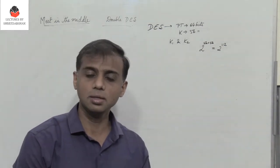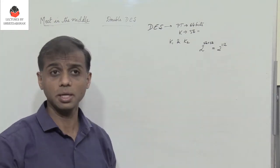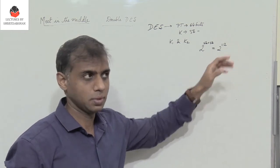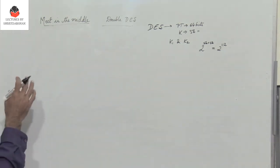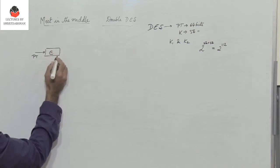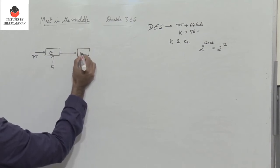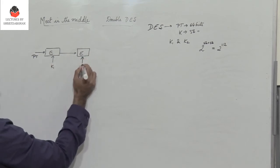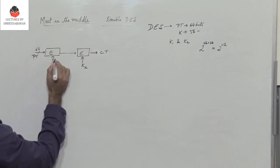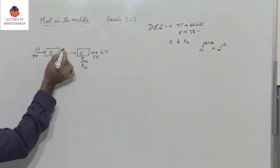So theoretically, the attacker has to try all 2^112 possible keys in order to decrypt and identify the key — but that really does not happen. Double DES does not provide a security of 2^112. When we look at double DES, we have the plain text given to the encryption algorithm using the first key K1, and then the encryption algorithm is used a second time using the second key K2, producing ciphertext CT. We consider this intermediate value as X.